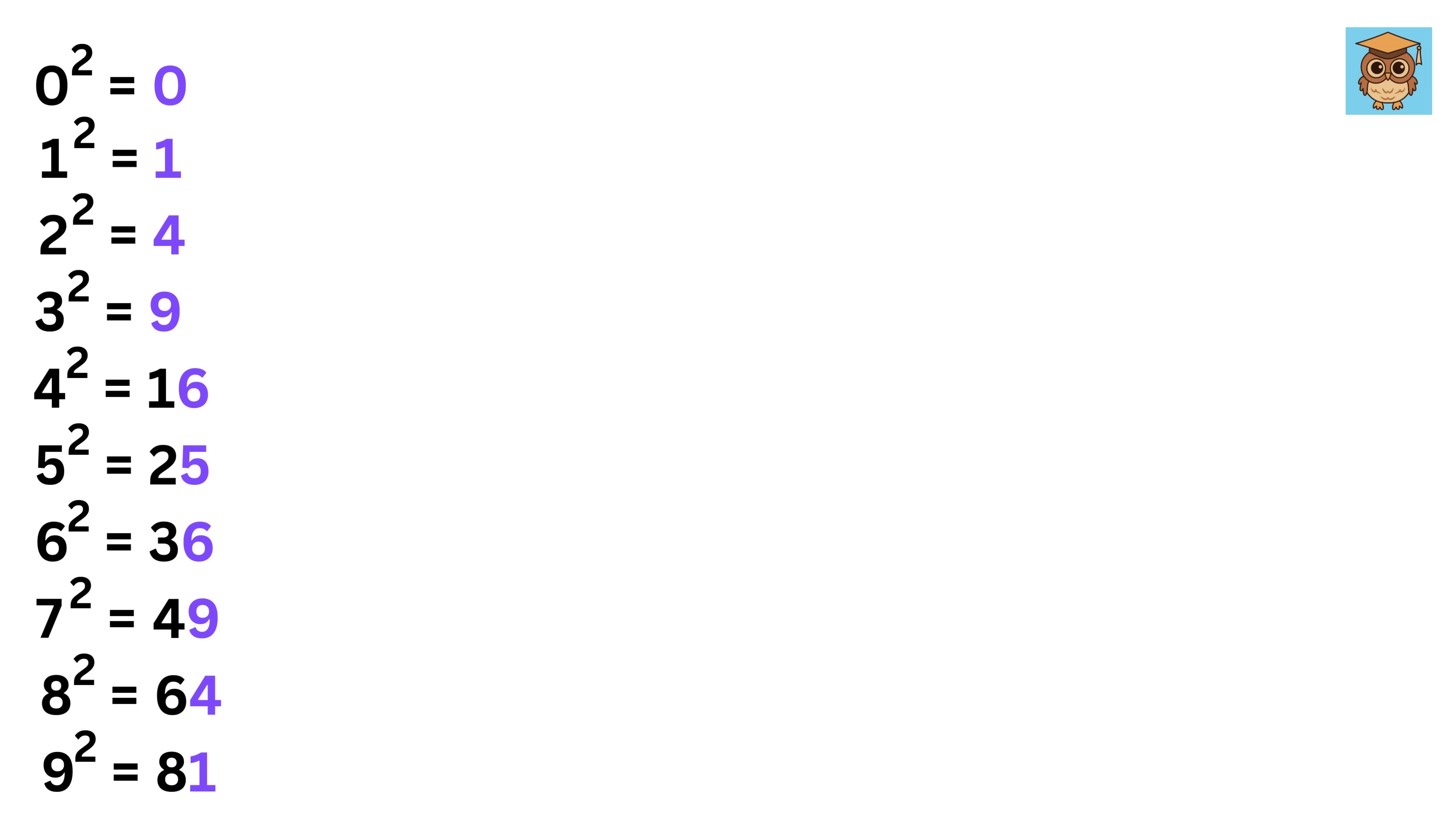So, now let us look at an example. Suppose we want to calculate the square root of 1225. First thing we do is look at the last digit of this number.